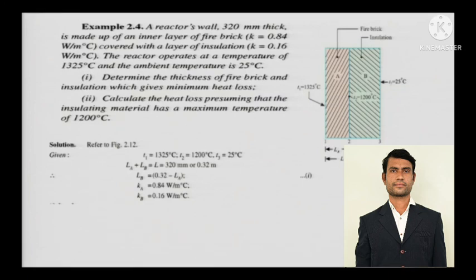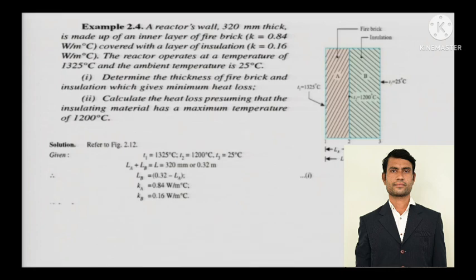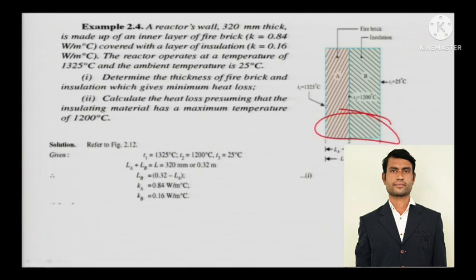Now we are entering into the composite zone. A reactor's wall 320 mm thick is made up of an inner layer of firebrick with K = 0.84 watts per meter degree Celsius, covered with a layer of insulation with K = 0.16 watts per meter degree Celsius. The reactor operates at 1325 degree Celsius and the ambient temperature is 25 degree Celsius. There are two layers of the composite wall — one is the firebrick and one is the insulation.